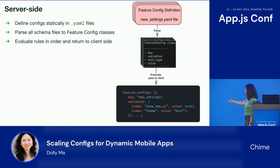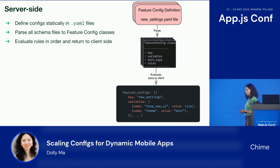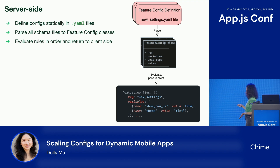Here is a result of our evaluation. It's a list of all the configs, and for each config we have a key for the config, and the variables is also a list. For each variable, we have a name and evaluated value for that variable.